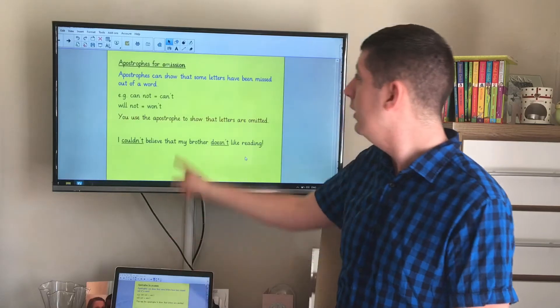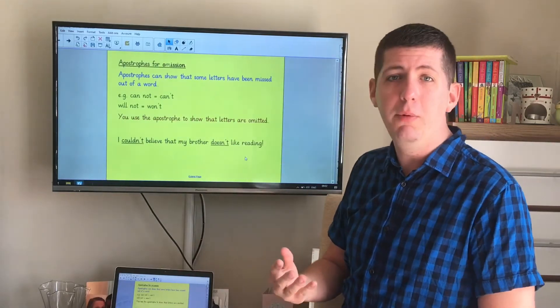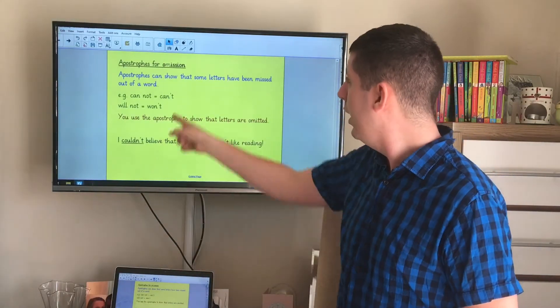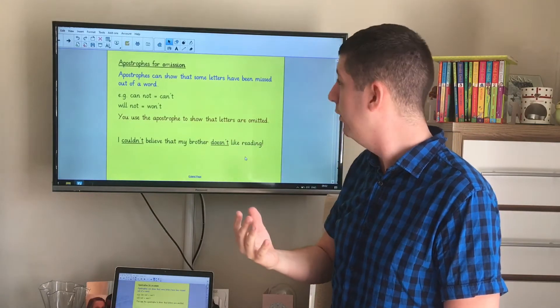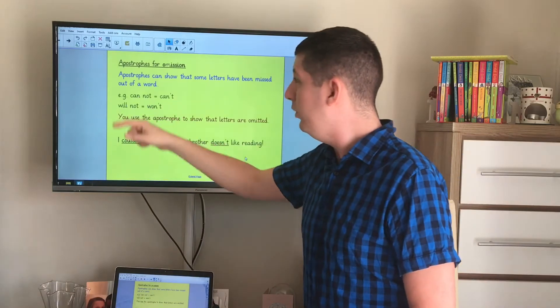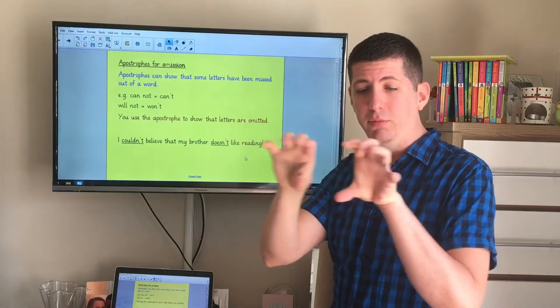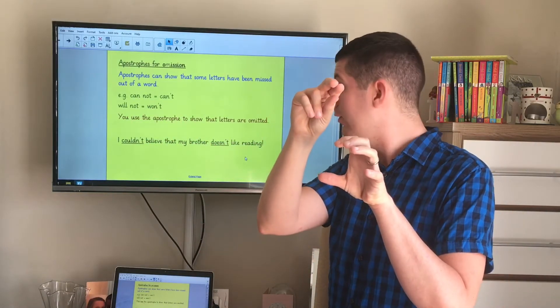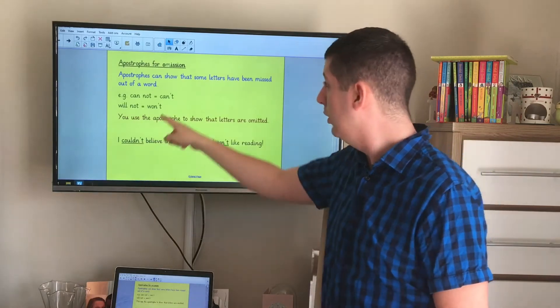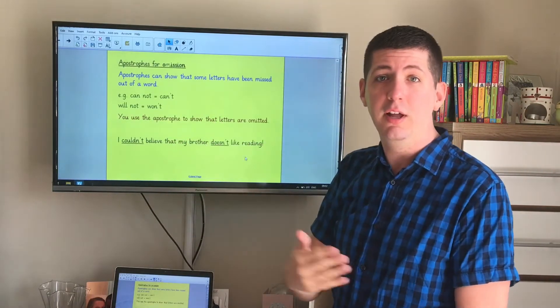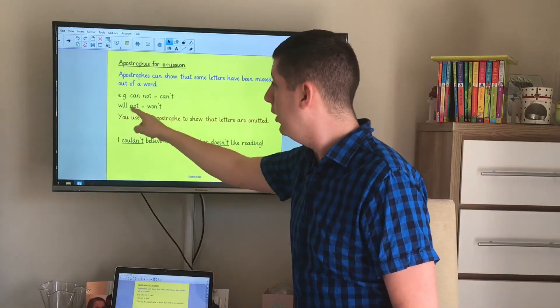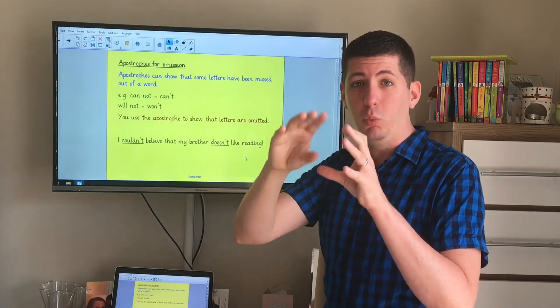The second reason is for what's called omission. Omission means missing something out. So apostrophes can be used to show that some letters have been missed out of a word. For example, with the words can and not I can put them together, get rid of some letters and change it to can't. You can see the apostrophe has gone there to show that the N and the O in not have been omitted, they've been left out.